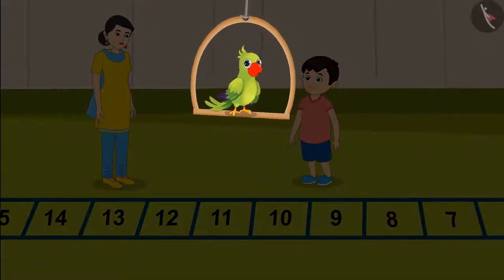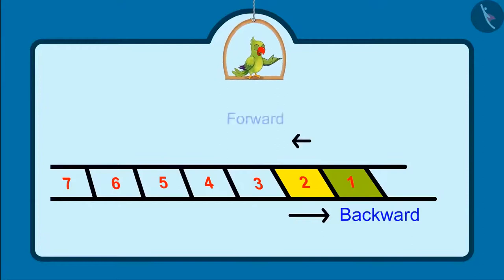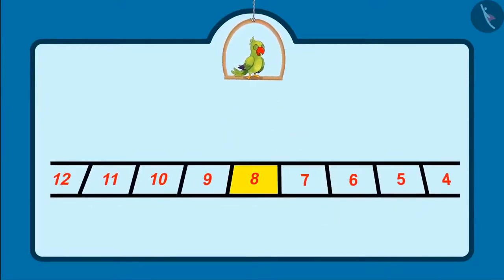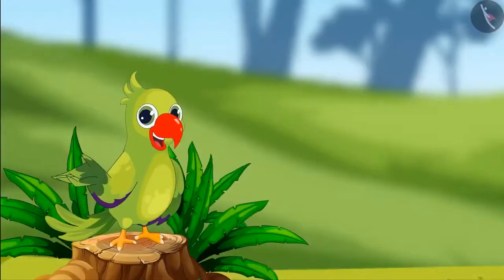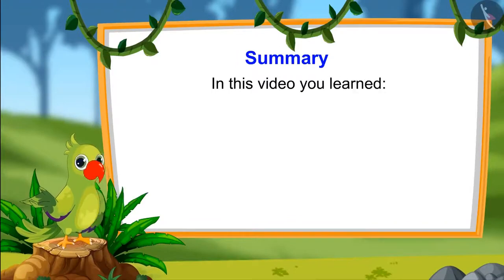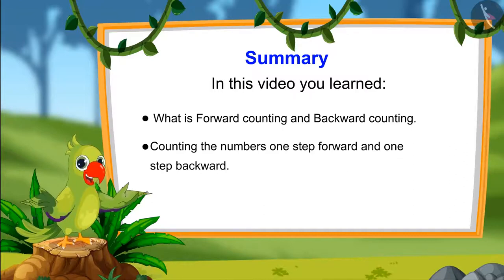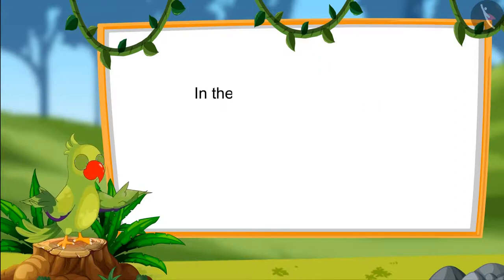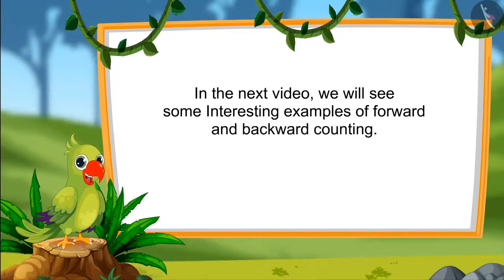Hi again, kids. I am back. Here you saw how we can count forward and backward from a number. A number backward from 2 is 1, and forward from 2 is 3. A number backward from 8 is 7, and a number forward from 8 is 9. So kids, that is all for today. In this video, you have learned what is moving forward or forward counting, and going backwards or backward counting, and also how to count one step forward and one step backwards. In the next video, we will see some interesting examples of forward and backward counting. Till then, bye-bye kids.